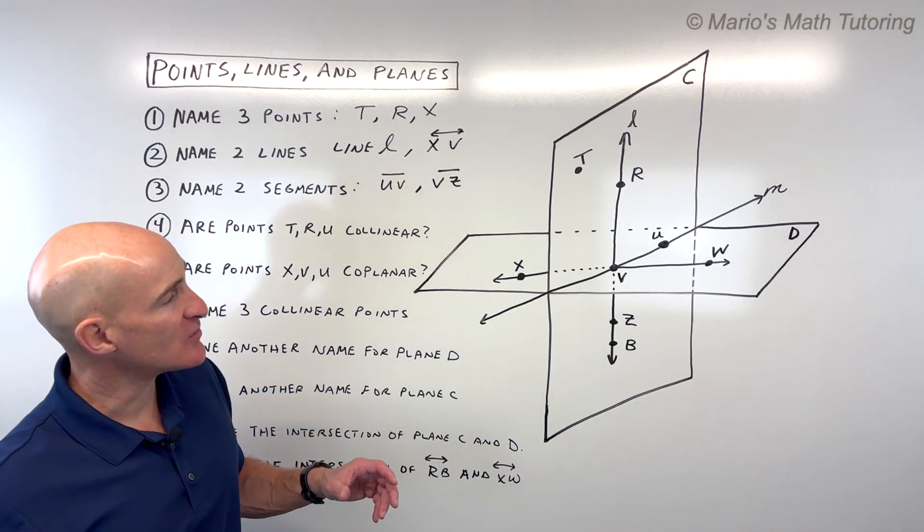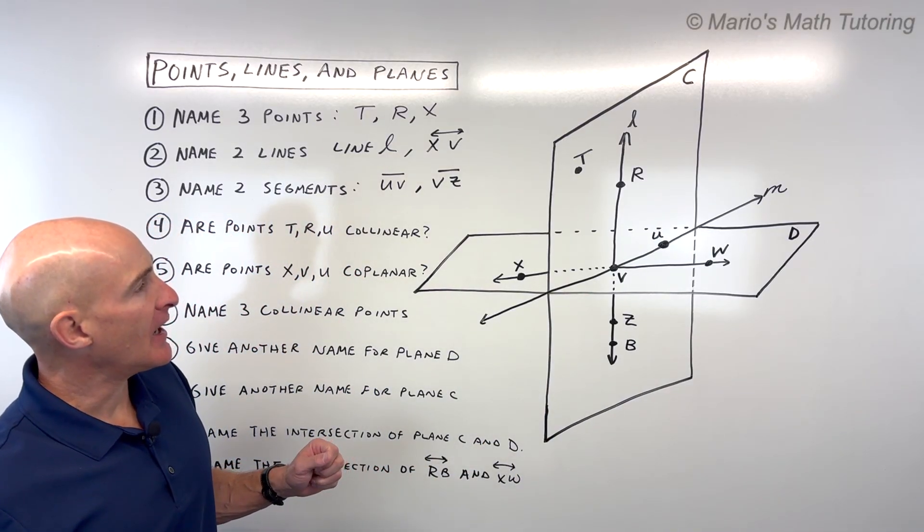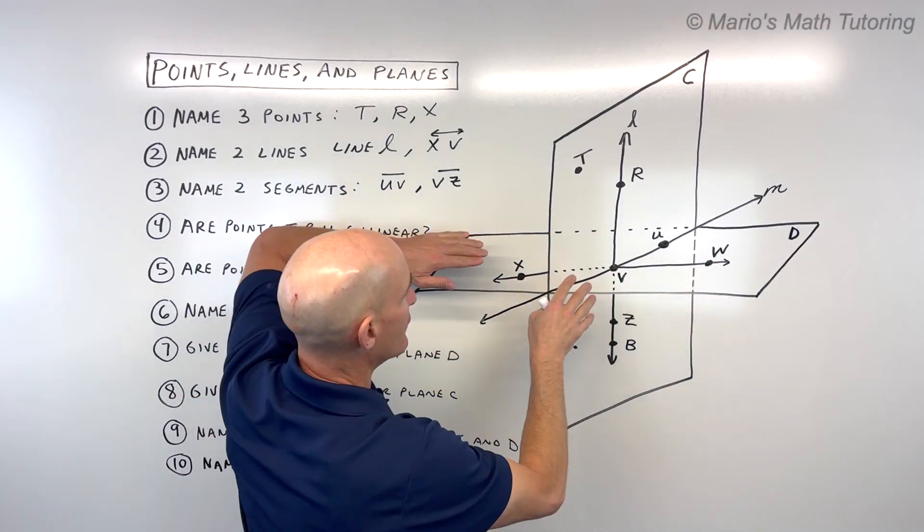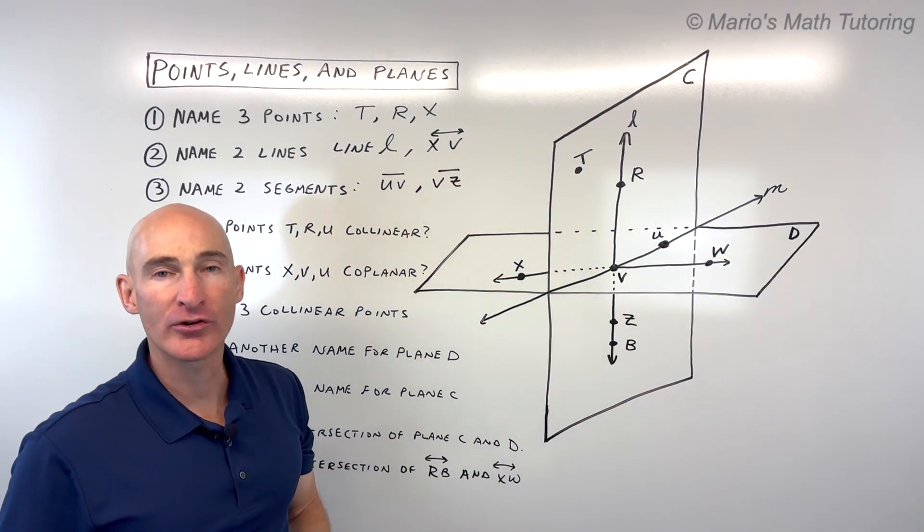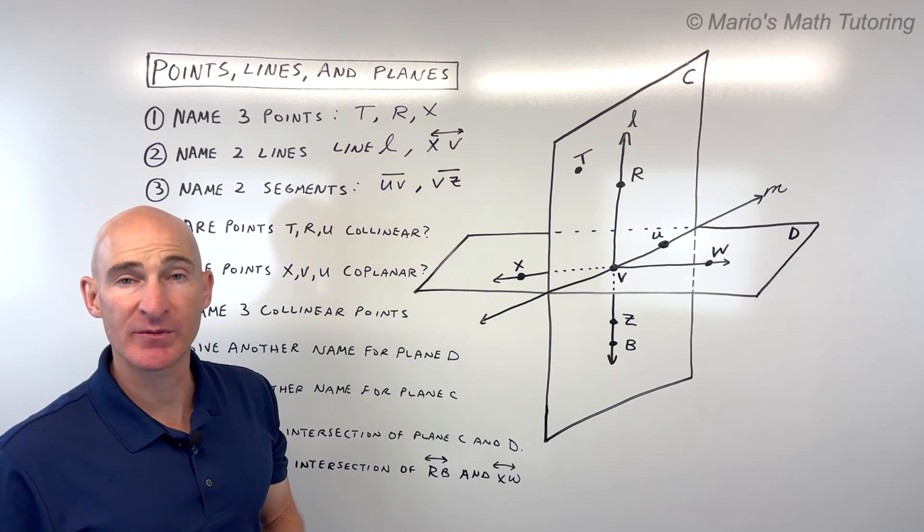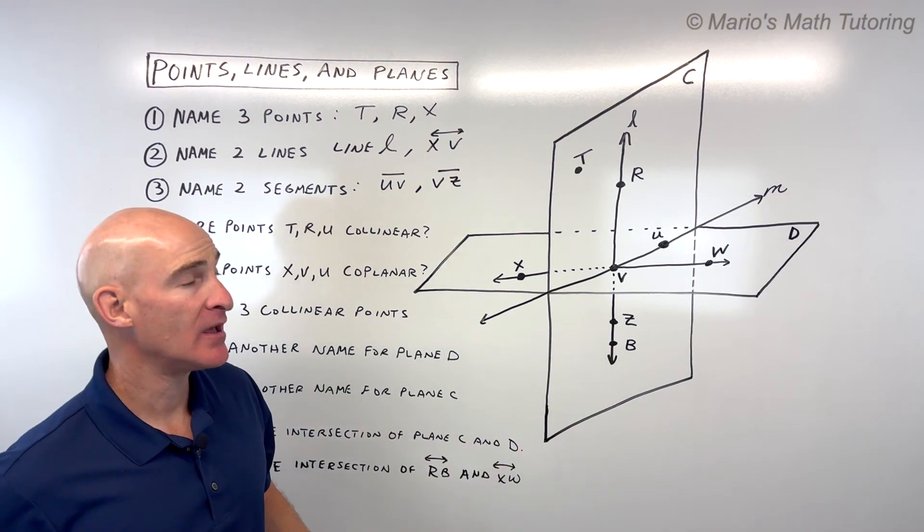With a plane, a plane actually keeps going forever and ever in both directions. It's like a flat wall or a sheet of paper or ceiling or floor. It just continues to go in both directions forever.